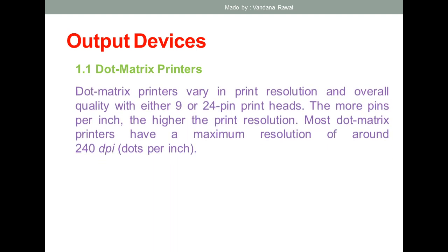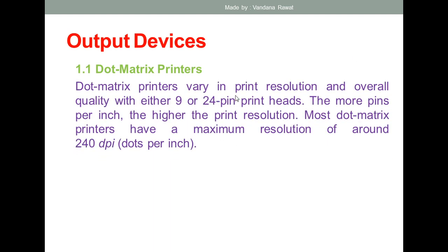Dot matrix printers may vary in printing quality depending on their design. They typically have 9 or 24 print pins, and the more pins per inch, the higher the print resolution. The maximum resolution of a dot matrix printer is 240 DPI — dots per inch. Because dot matrix printers work dot by dot, they are slow in nature.